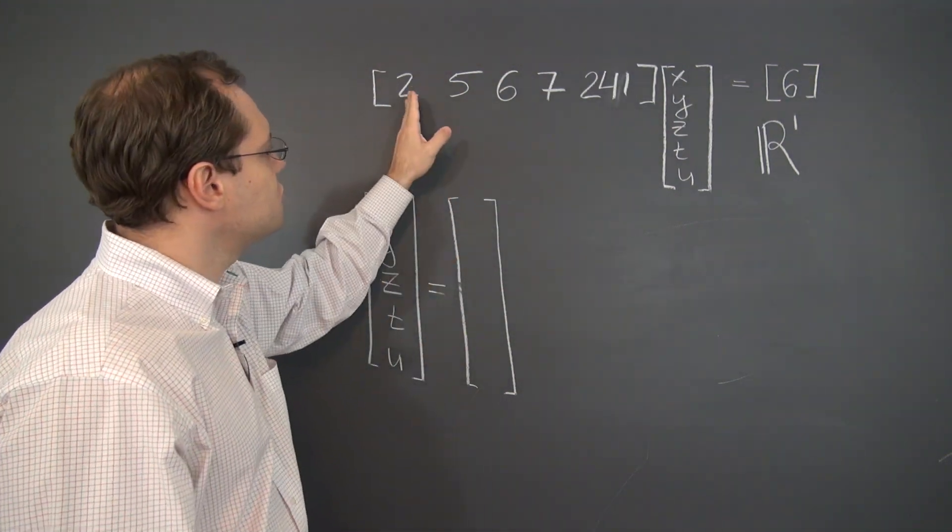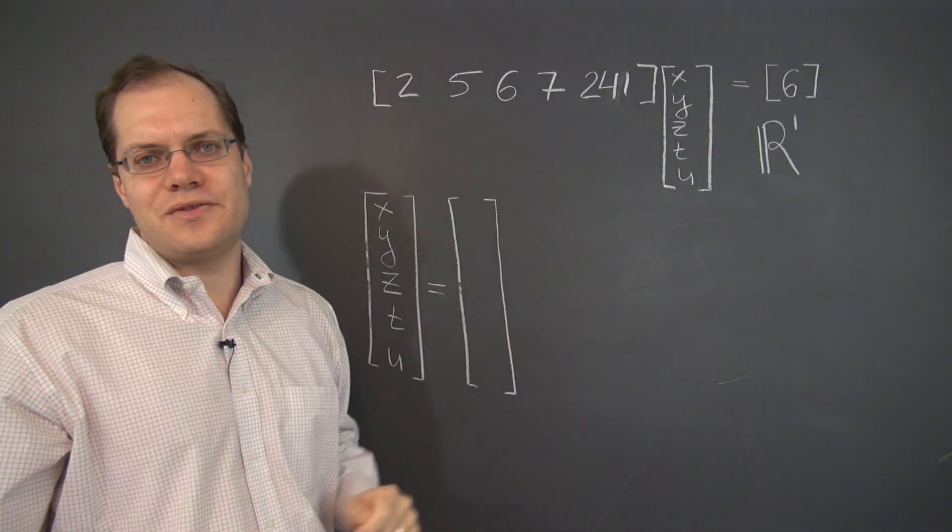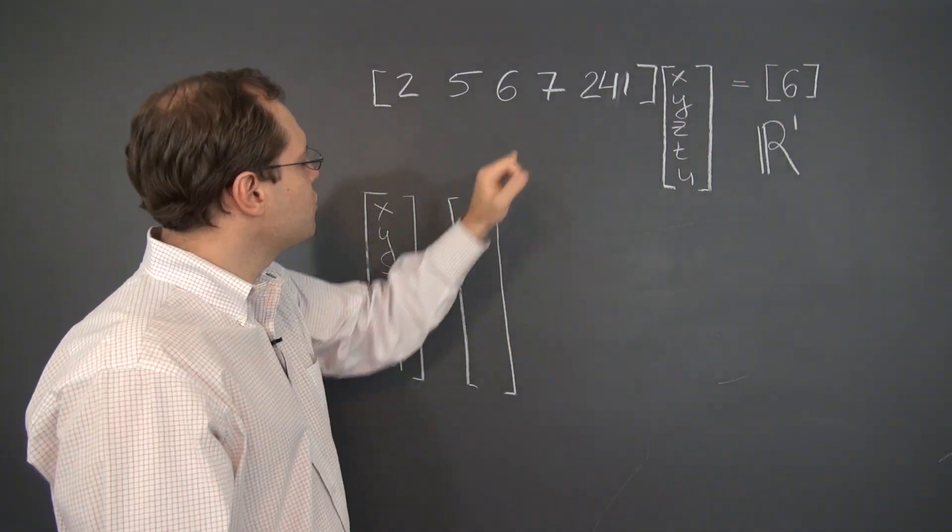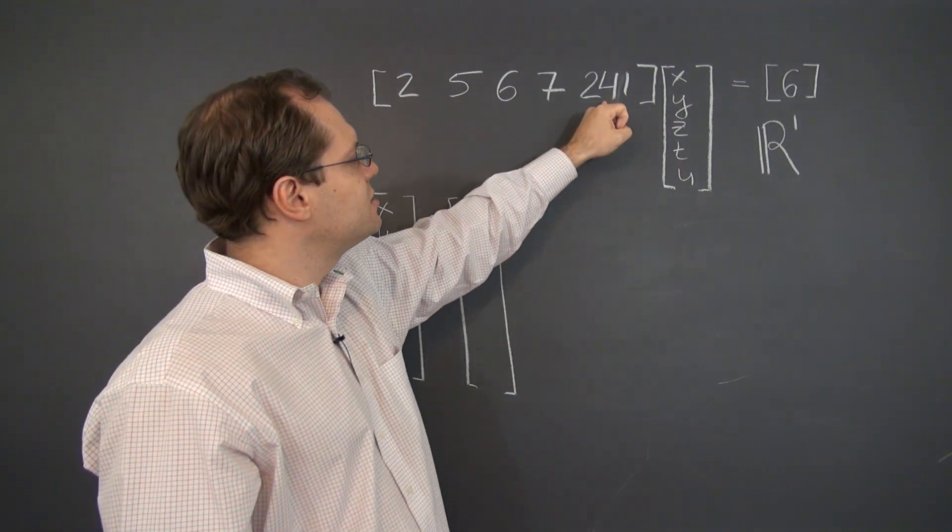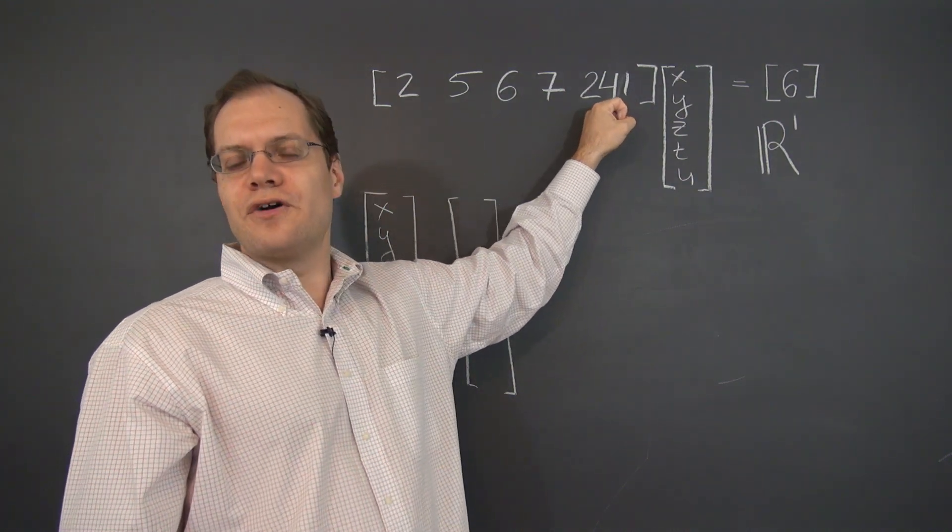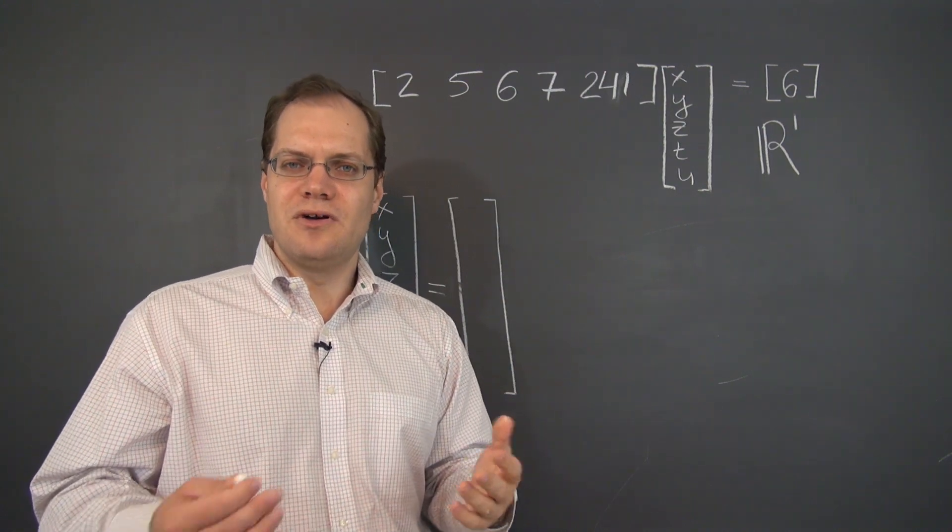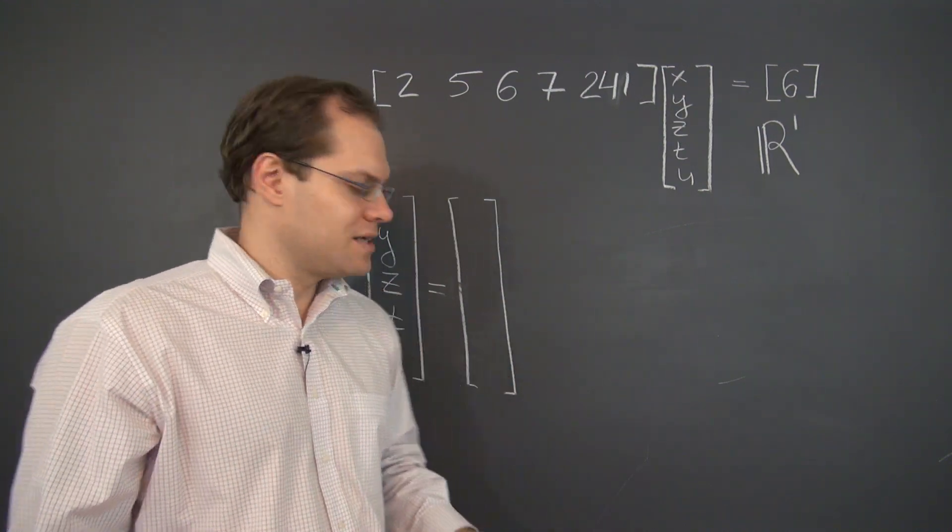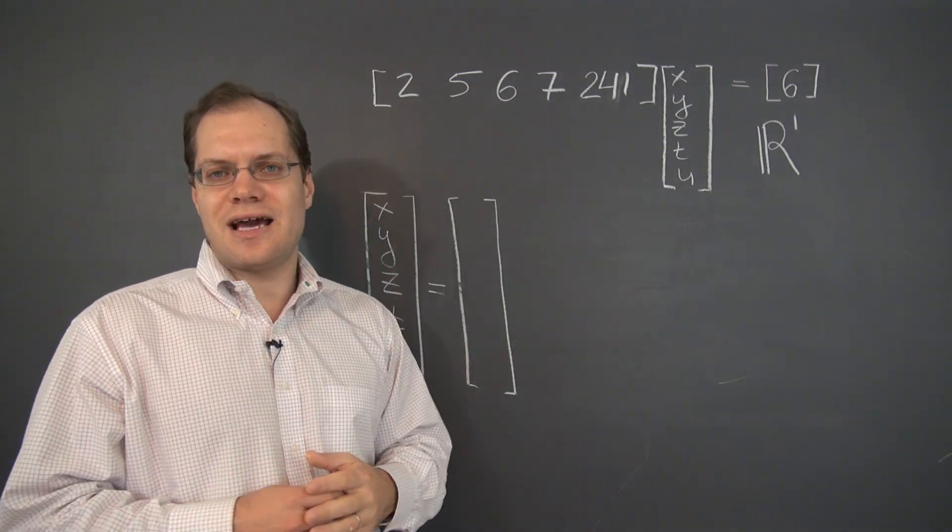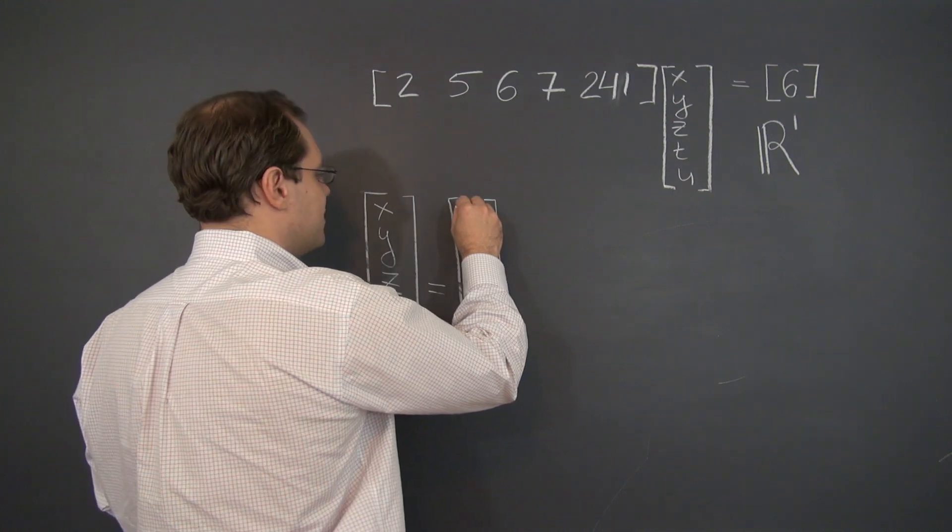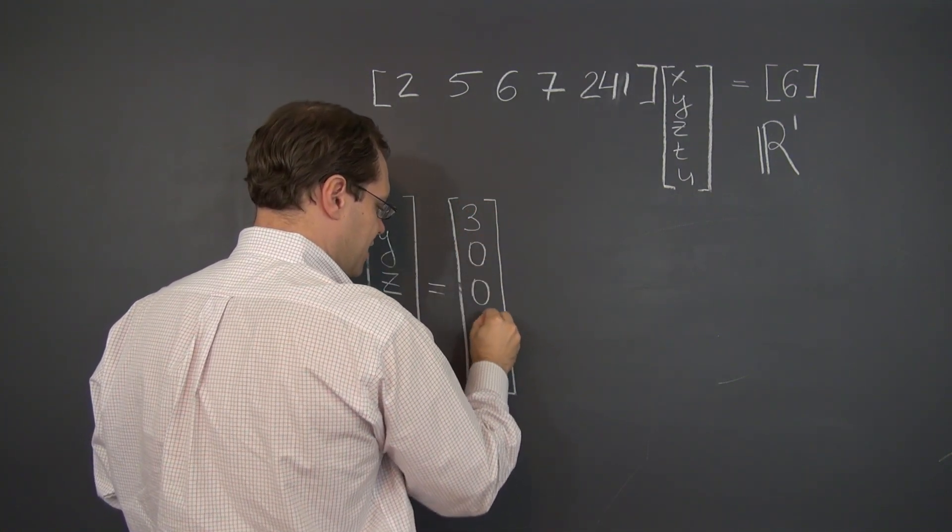So for the particular solution, you just need to take three of the first column to get the six and none of any of the other columns. Or you could have taken one of the third column, or you could have taken six 241st of the last column and none of the other columns. The choice is entirely up to you. And as we've discussed several times, the expression would be different, but the set of vectors that it captures is the same. Okay, so let's go with my original suggestion, which is three of the first column and none of the rest.